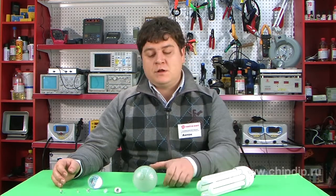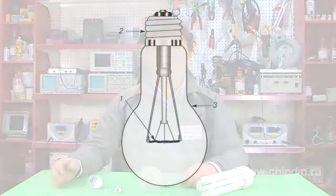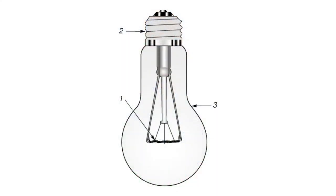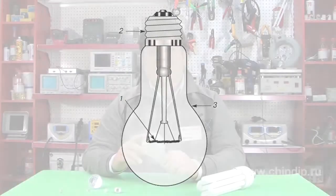Historically, the first to be invented was the well-known incandescent lamp. This is the most popular source of light so far. The incandescent lamp is arranged quite simply: a supply connecting socket, a glass flask, and a heated conductor.